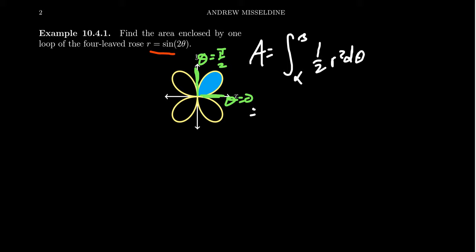So we're going to integrate one half from zero to pi halves. Our radius is just given here - this is our polar function. So we're going to get sine squared of two theta d theta.